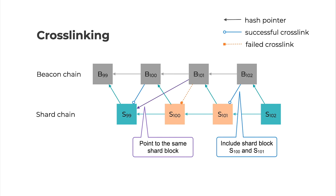It's possible that the committee doesn't form a cross-link successfully at every slot. In this figure, beacon block 101 doesn't cross-link the shard block 100 successfully — the orange line represents the failed cross-link. In this case, the shard state reference in the beacon state will remain the same after processing beacon block 101. When beacon block 102 forms a successful cross-link, it will include both the state transition information of shard block 100 and 101, cross-linking both of them together in one slot.